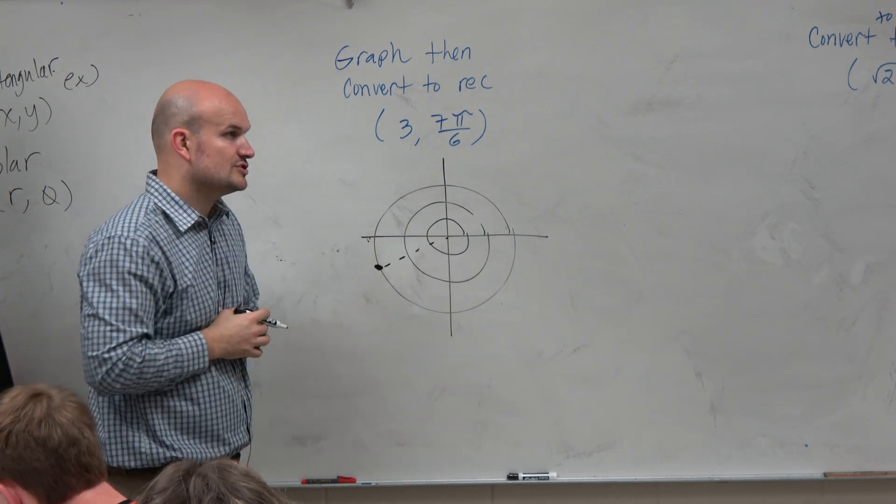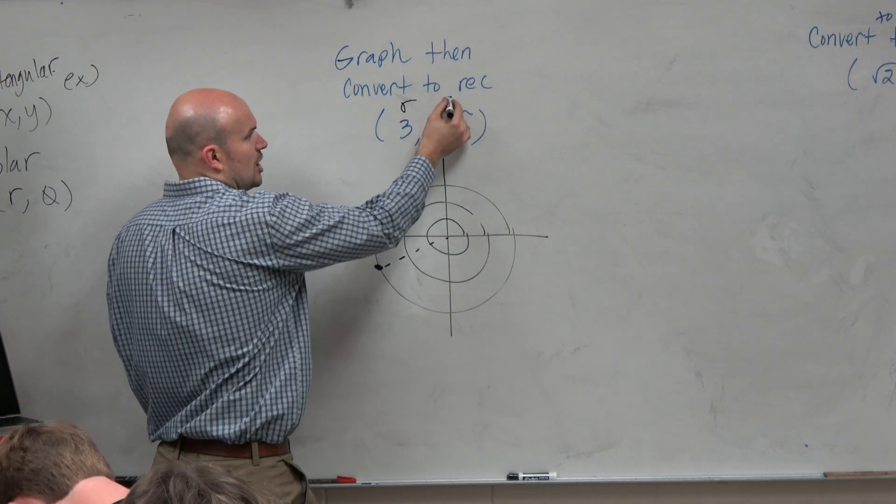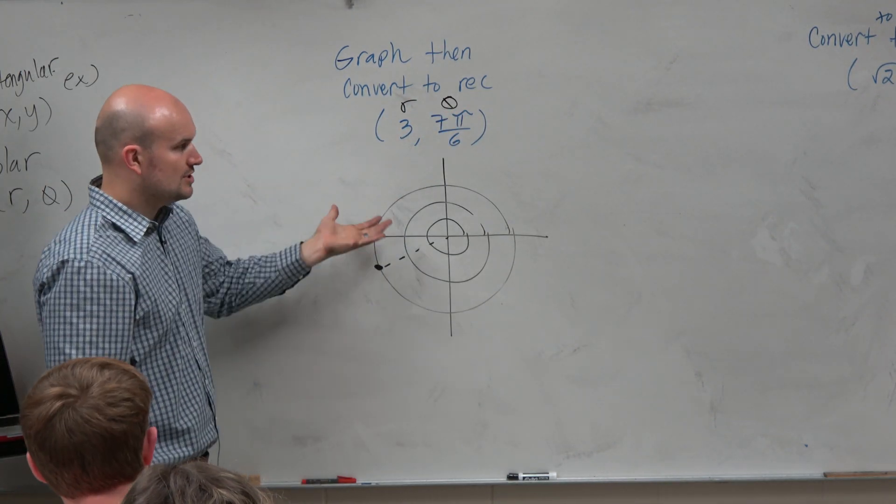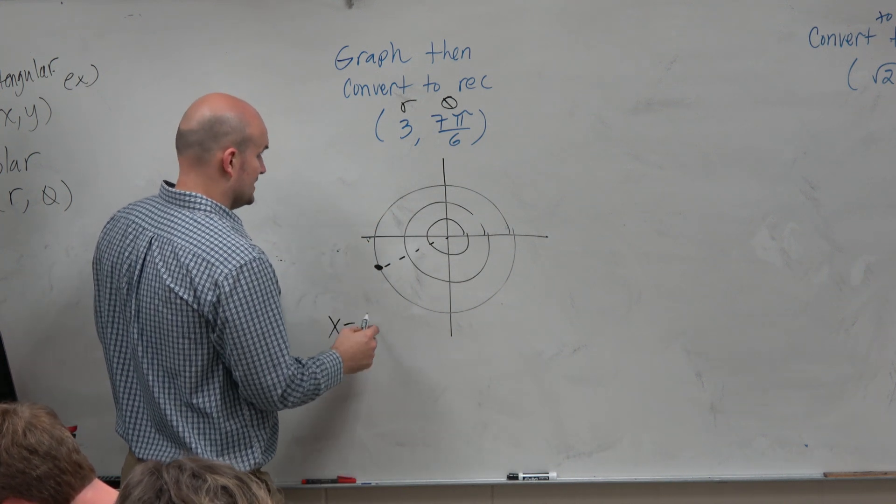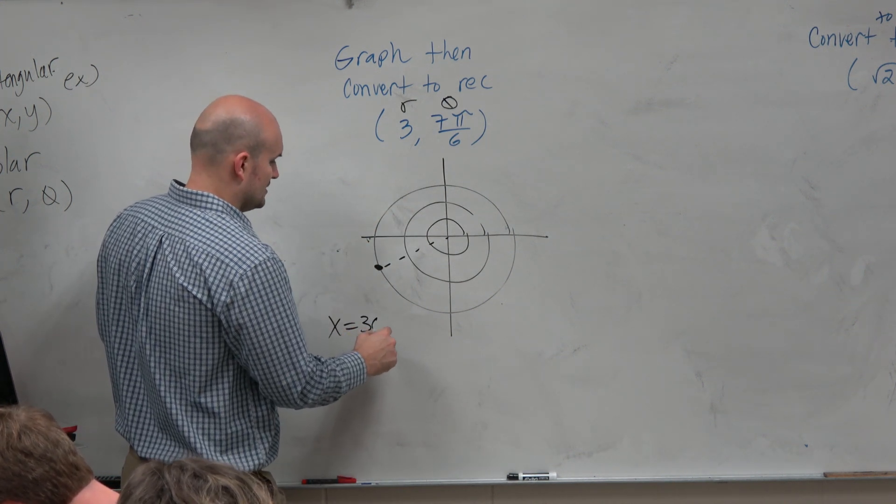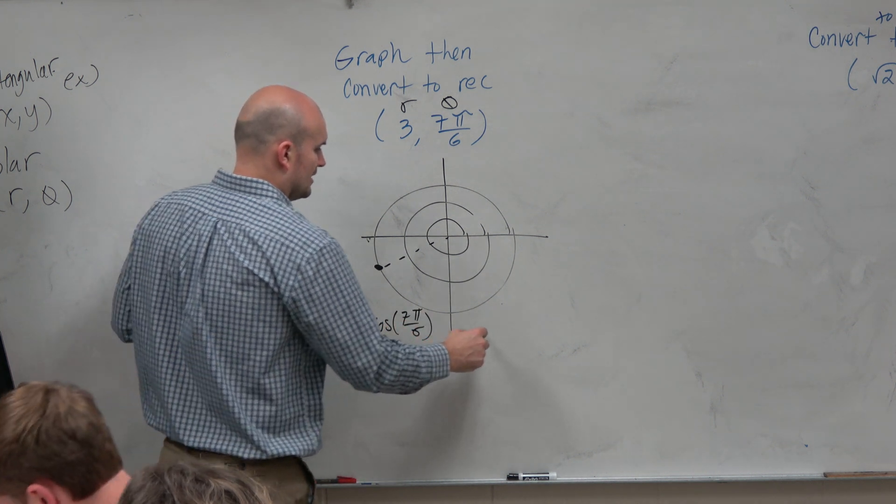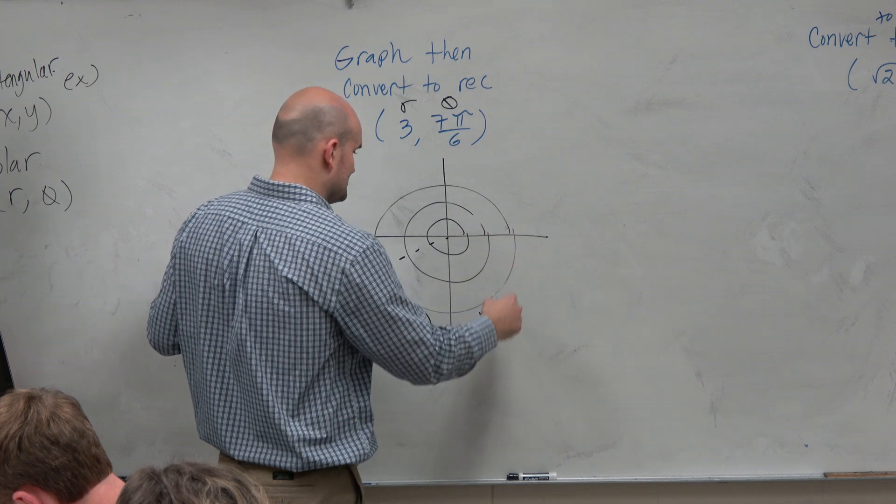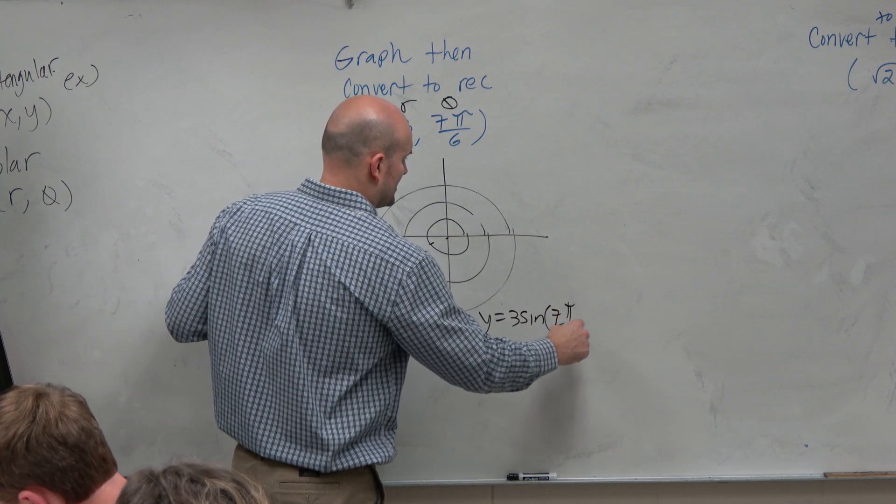Now let's go ahead and convert this to rectangular form. Remember, guys, this is r, and that's theta. So our basic definition here, x-coordinate is 3 times the cosine of 7 pi over 6. And y equals r times sine of theta, which is 3 times the sine of 7 pi over 6.